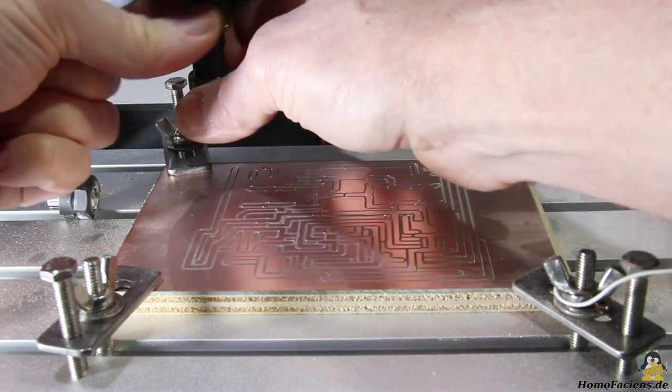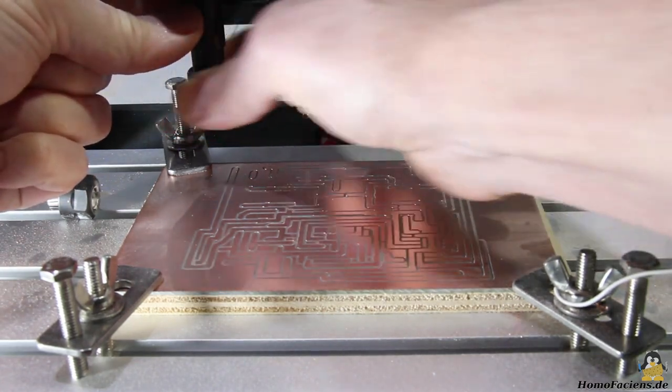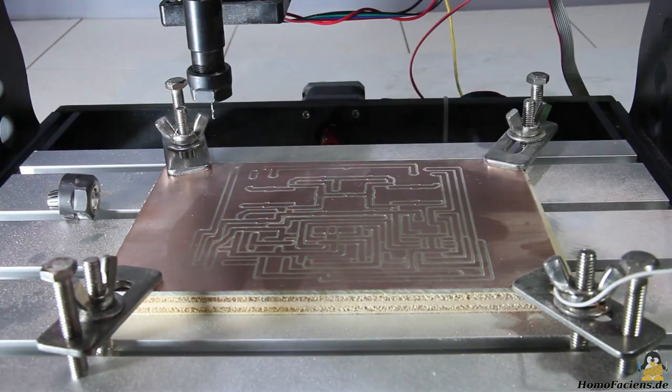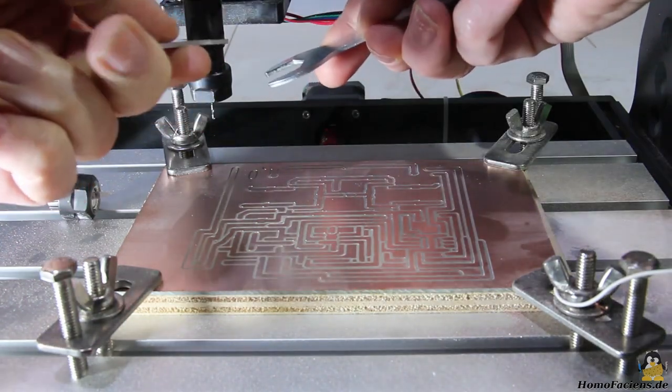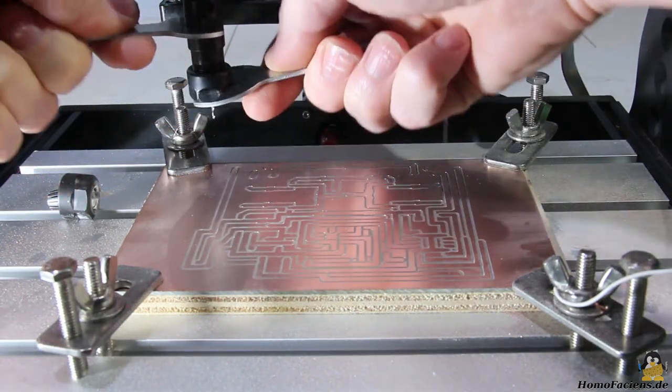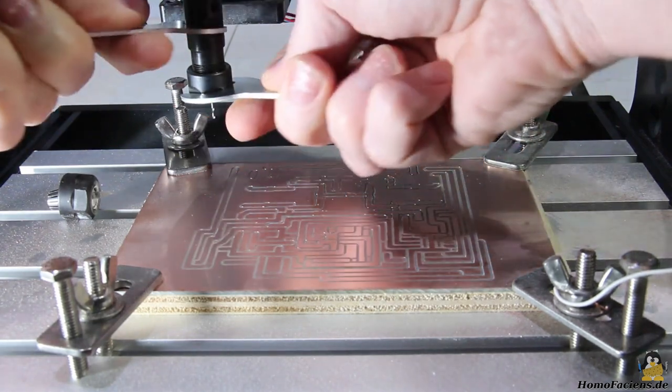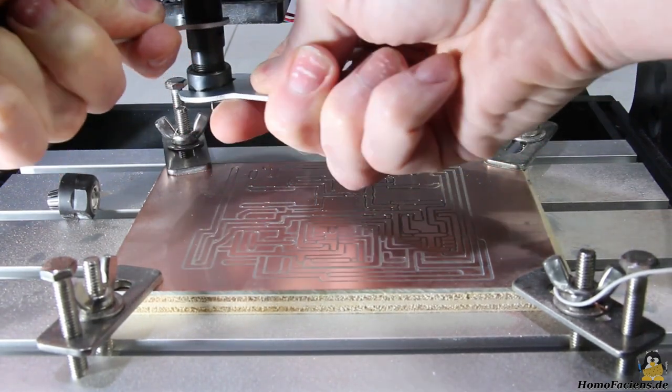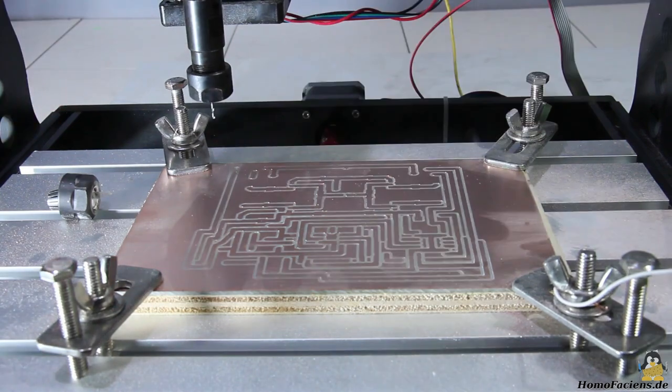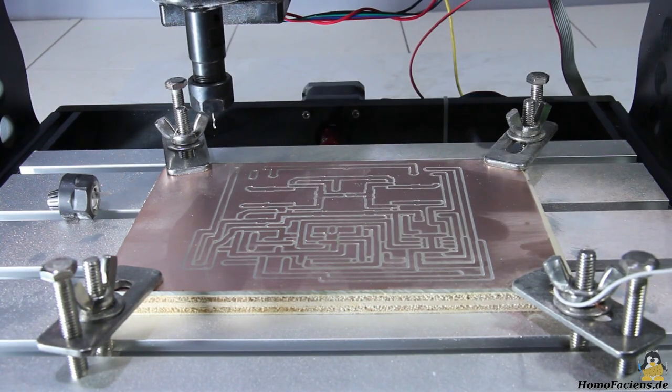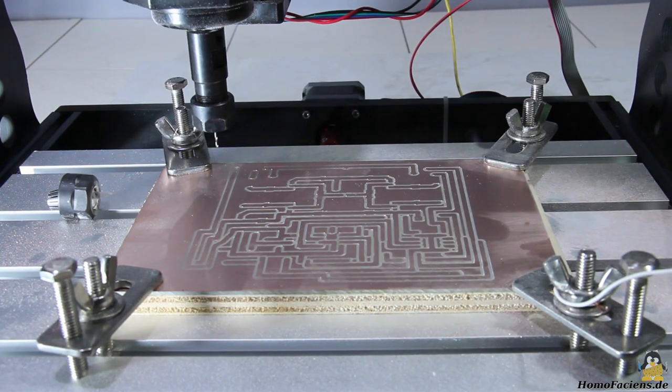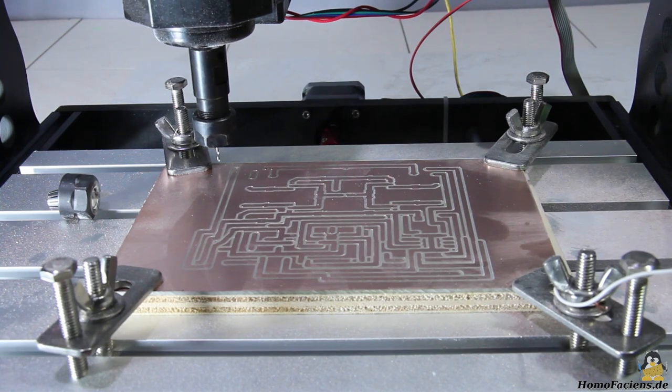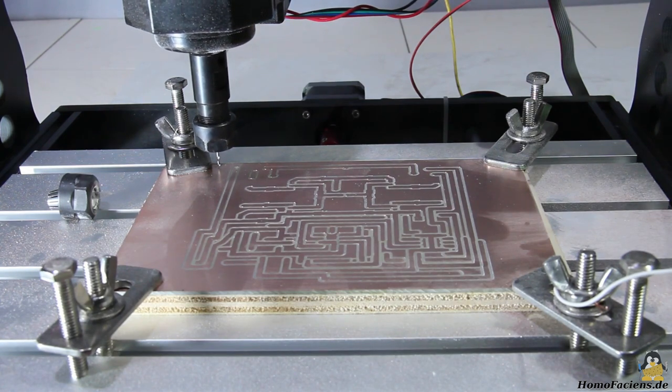After that, the holes are drilled in the next pass. I use a standard 1mm drill that I had on stock. The second nut and the corresponding ER11 insert for the 1mm shaft also were in my workshop. The script first places holes in all four corners of the board.